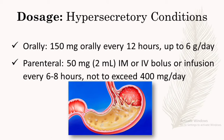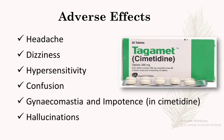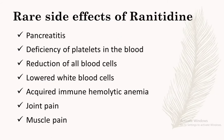Some common adverse effects of ranitidine are headache, dizziness, hypersensitivity, confusion, and hallucination. The main adverse effect seen in cimetidine is gynecomastia and impotence; this is mainly seen in cimetidine rather than ranitidine. Few rare side effects of ranitidine are pancreatitis, deficiency of platelets in the blood, reduction of all blood cells, lowered WBC, acquired immune hemolytic anemia, joint pain, and muscle pain.